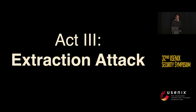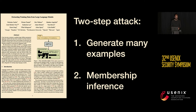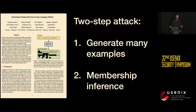We're going to do that with an extraction attack that directly recovers individual examples from the training set. This attack is fairly straightforward — we're basically going to follow a previous attack we had on language models and apply it to diffusion models. Specifically, we're going to do a two-step attack where first we generate a bunch of images, and then we run a membership inference attack to separate the novel generations from the actual memorized data.